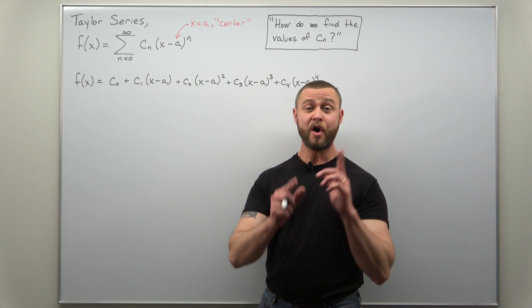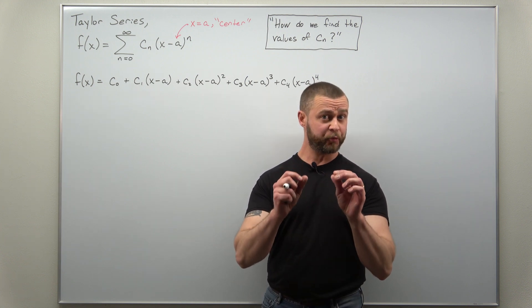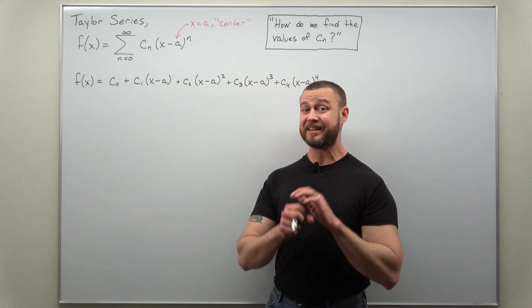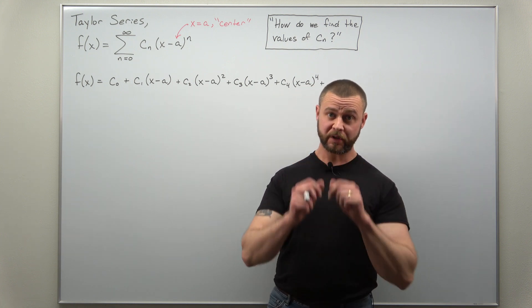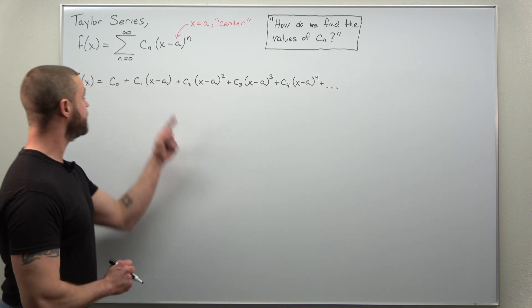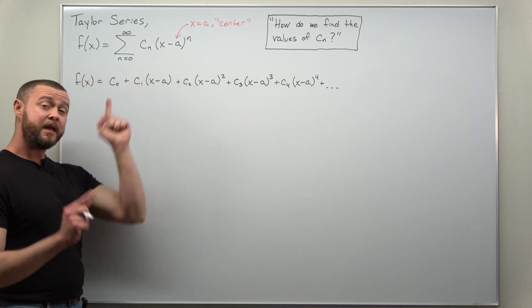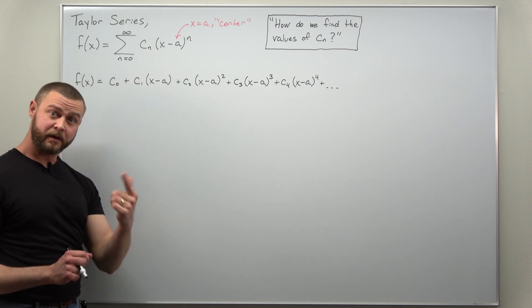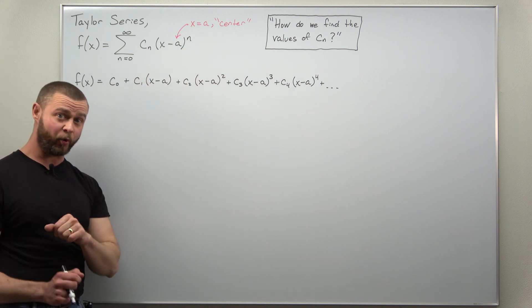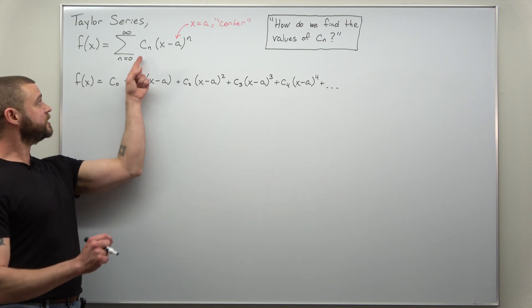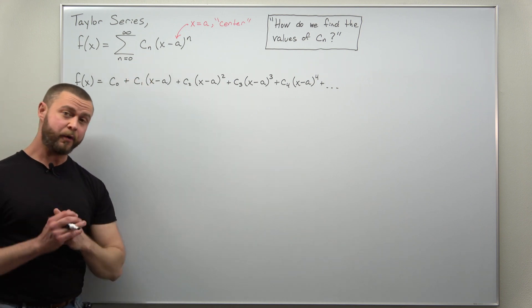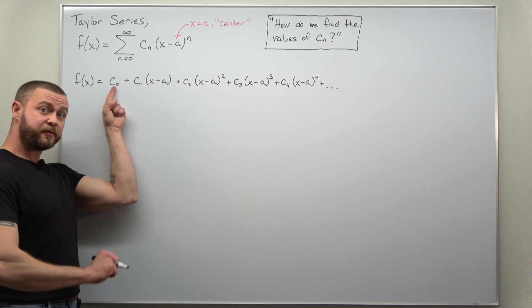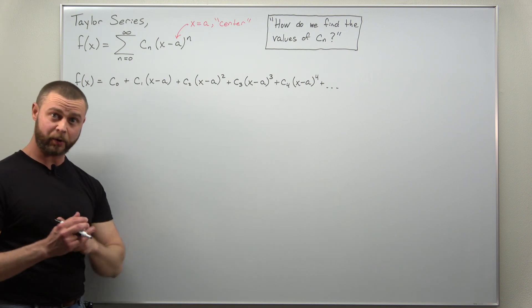Greetings fellow mathematicians. We're going to take a look at a short proof of where the values of the coefficients c sub n come from in a Taylor series. We start with the Taylor series representation for a function, written as a power series in powers of x minus a, where a is called the center point. Our goal is to find the values for c sub n — the coefficients — going in order: first c sub 0, then c sub 1, and so on.